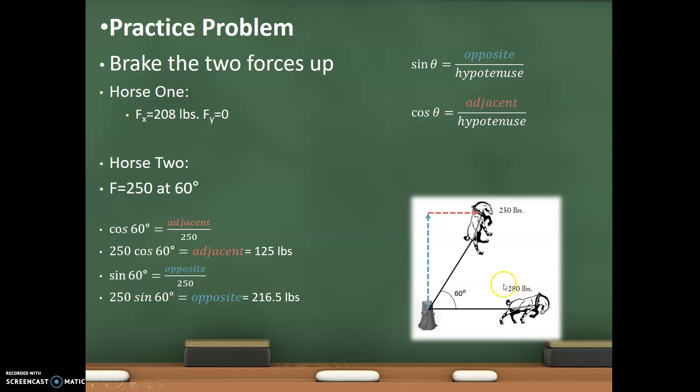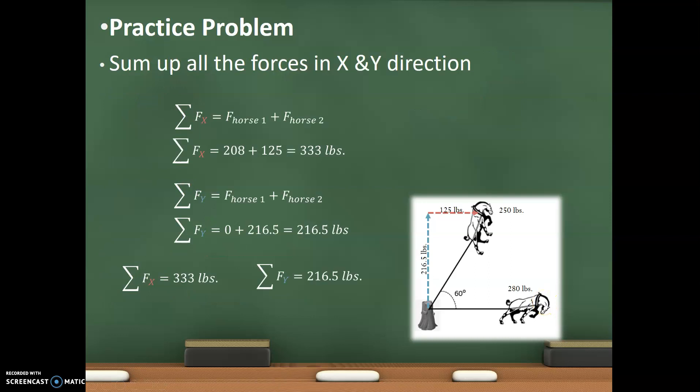Now, once we got that, that only tells us the components. I got a component up at 216.5 and a horizontal at 125 and a 280 also horizontal. So what we need to do is sum up all the forces. We need to add all those forces up so that they all equal something. So we're going to take all my X's of horse, all my forces in the X direction of horse 1 and horse 2 and add those up. So my 280 and then we're going to take my plus my 125 and that will equal 333 pounds. Then we take the Y component. Horse 1 didn't add anything in the up-down direction. So it's 0 plus the 216.5 in the vertical direction. It just equals 216.5. So now I have a combined there two forces in the 1 and the X and 1 and the Y. The X is going to be 333 pounds and my Y is 216.5.